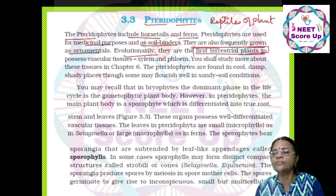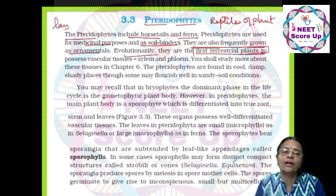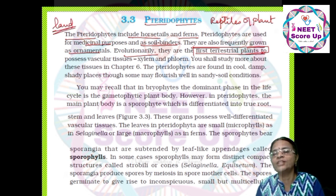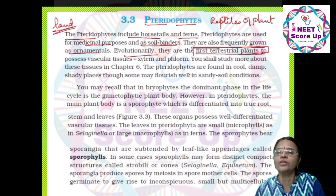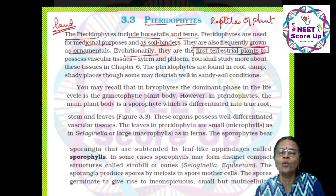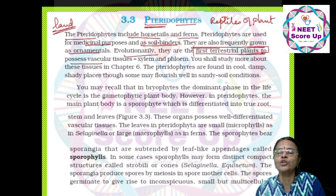Bryophytes are terrestrial but are the first land plants. The pteridophytes are the first truly terrestrial plants — they can support themselves and have true roots. They still require water for fertilization via spores. Importantly, pteridophytes possess vascular tissue; xylem and phloem start from the pteridophytes.